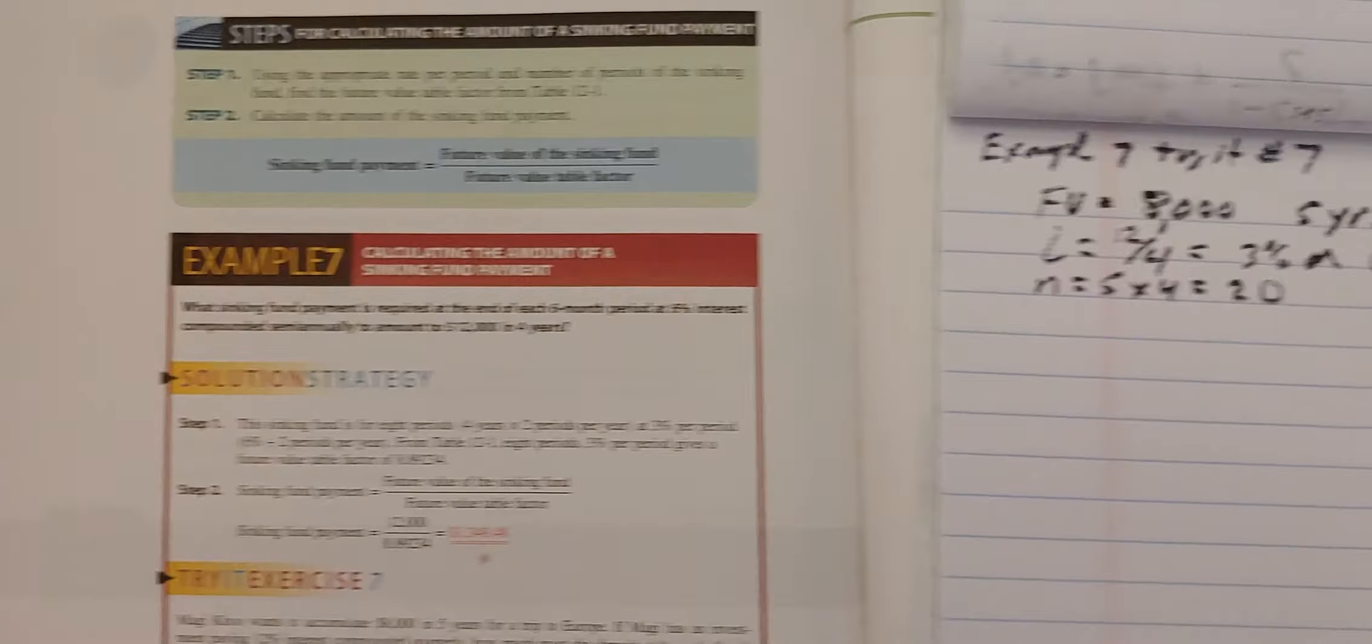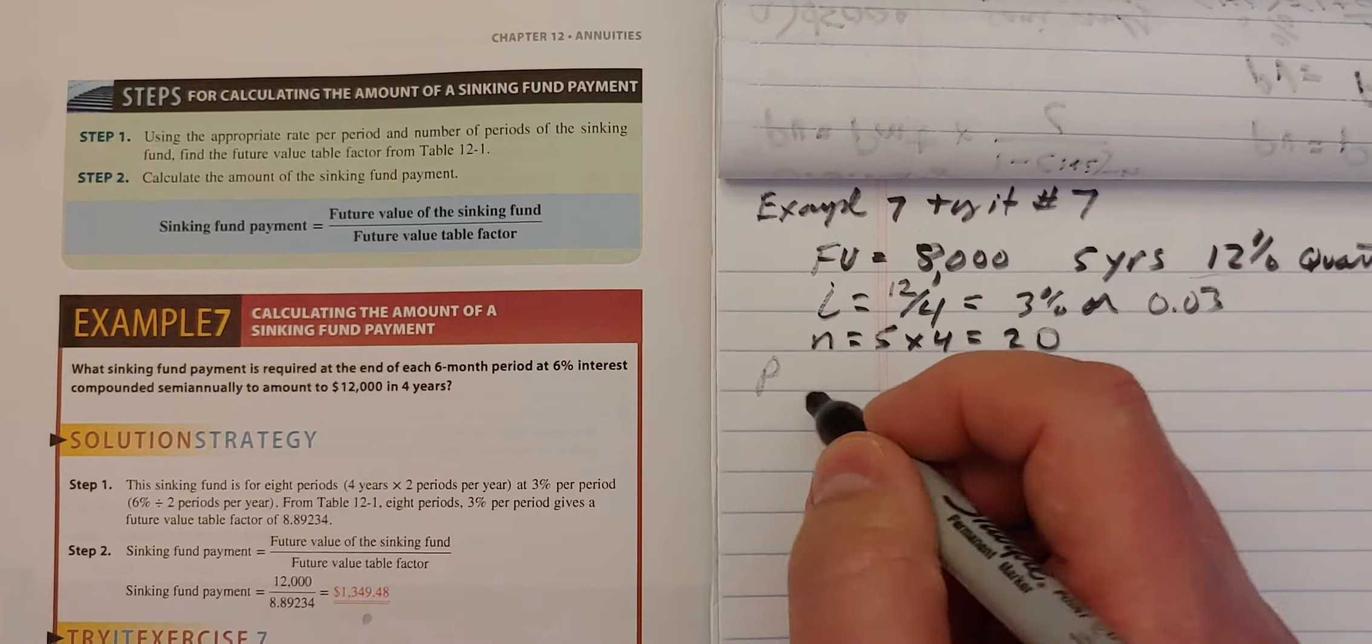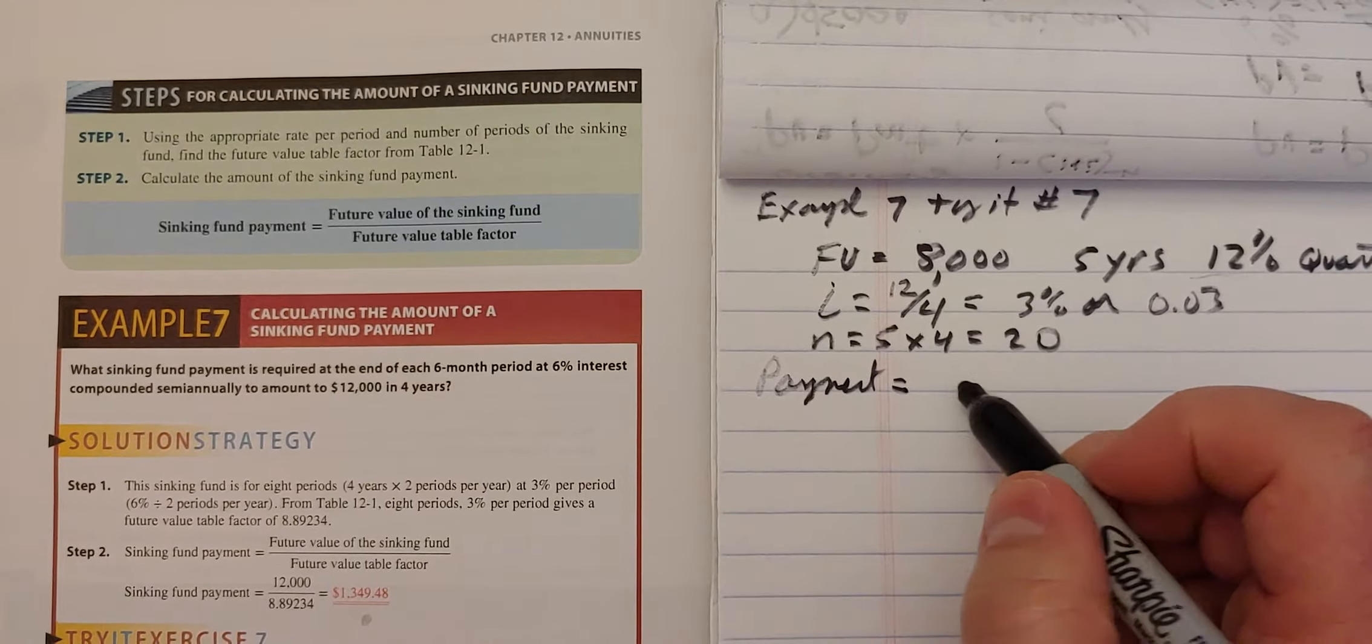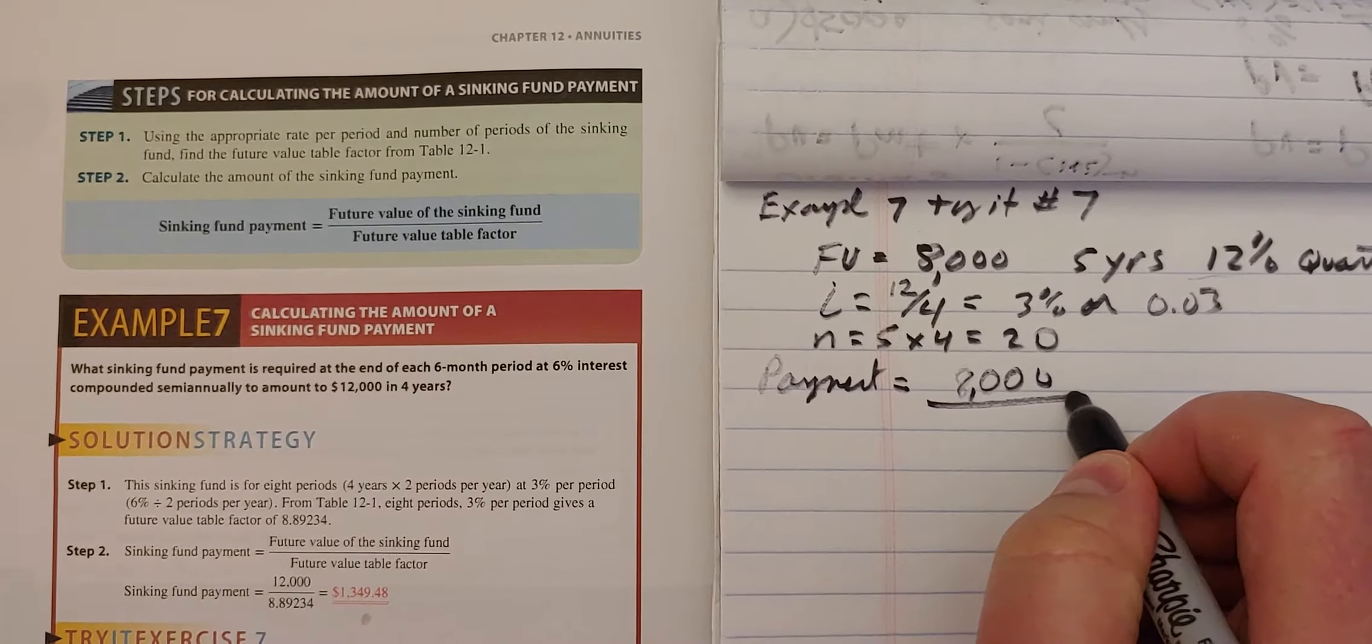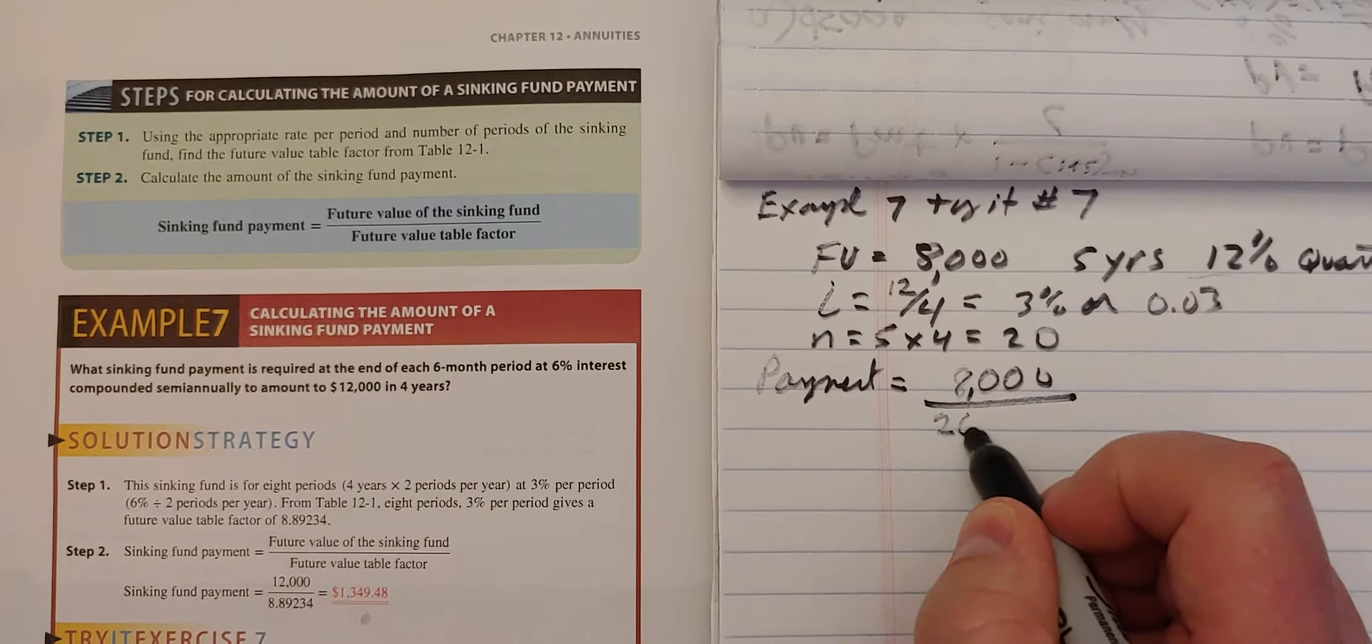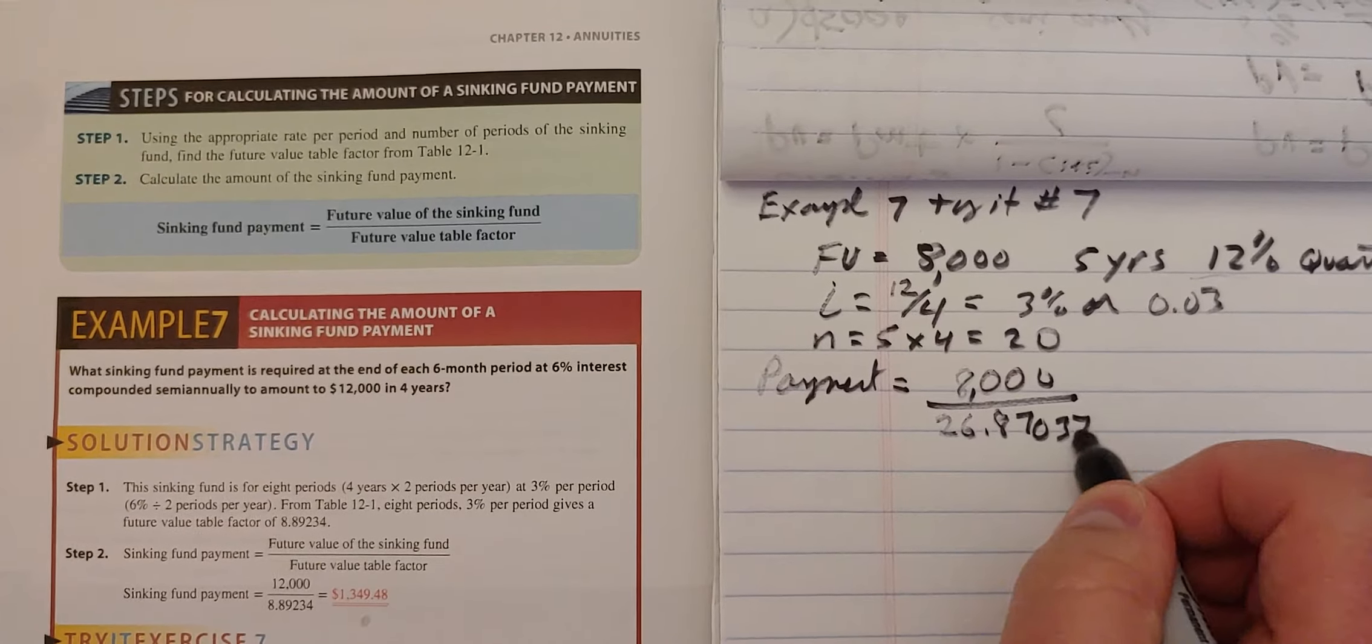So we know from our formula over here, that the payment equals the future value, $8,000, all over the factor we found in the table, 26.87037.